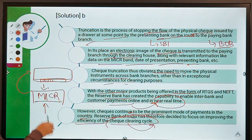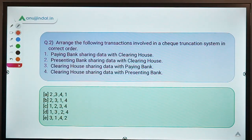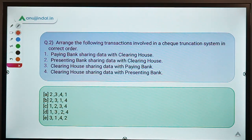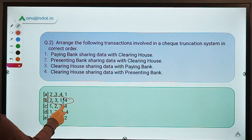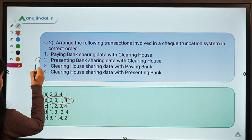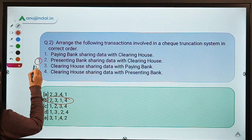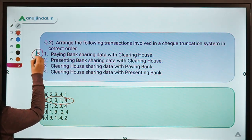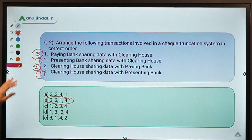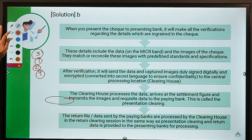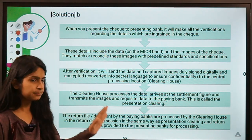Moving to the second question: you have to arrange the transactions involved in the check clearing cycle in the correct order. The correct option is B, meaning the order is 2, 3, 1, 4. Between the presenting bank and the paying bank there is an intermediary called the clearing house.